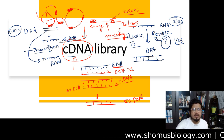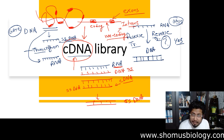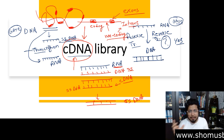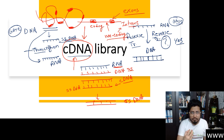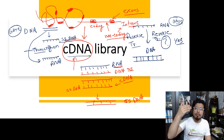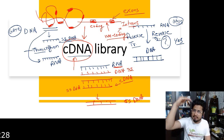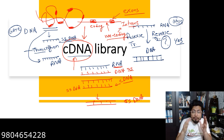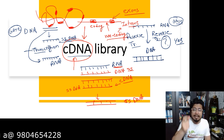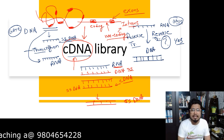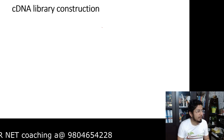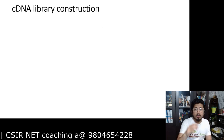Exons are coding and introns are non-coding. If we construct a genomic DNA library, it will be composed of every single piece of DNA — both coding and non-coding regions. But in reality we sometimes need to deal only with the coding region of DNA, which codes for protein. That region is more important because in molecular biology, the central dogma is DNA to RNA and RNA to protein. So if we want to make a library of only the coding region from the eukaryotic genome, we construct a cDNA library.